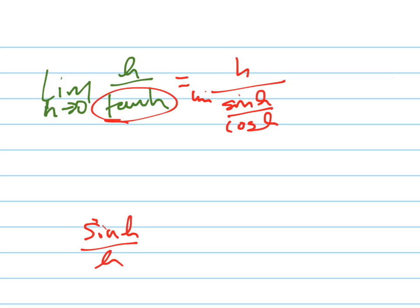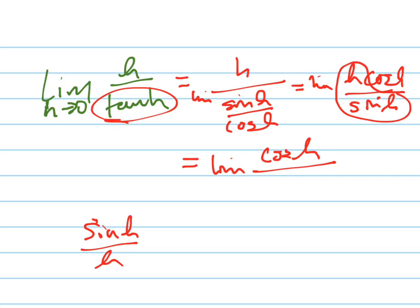So if I multiply by... I'm going to write this out. It's going to be h cosine h over sine h. But you can take this now and flip it to the bottom. So that's the limit of the cosine h all over sine h over h.